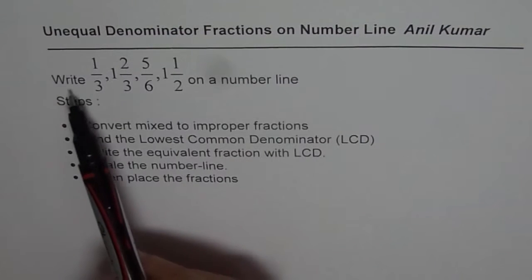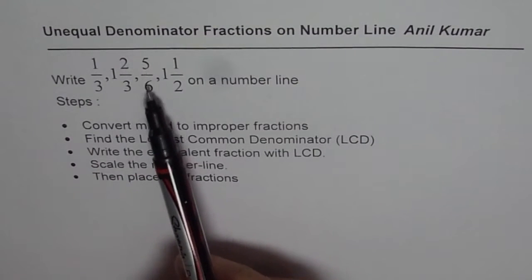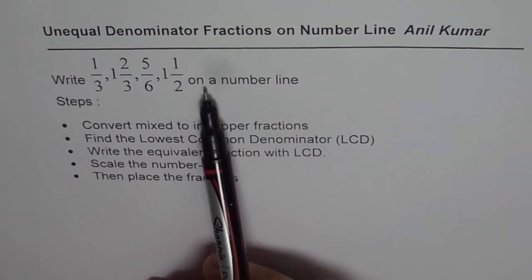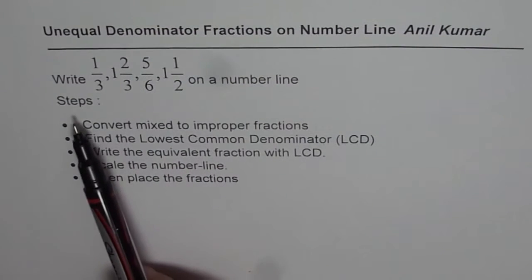Question is, write 1 over 3, 1 and 2 over 3, 5 over 6, and 1 and a half on a number line. The steps involved are: